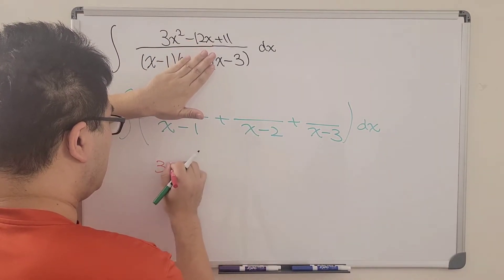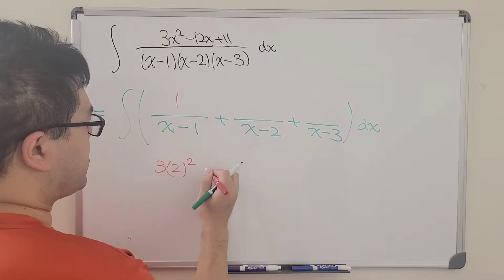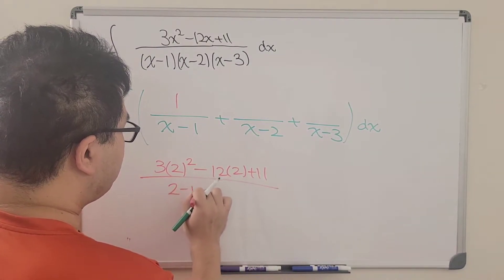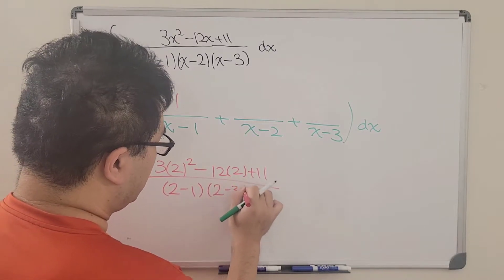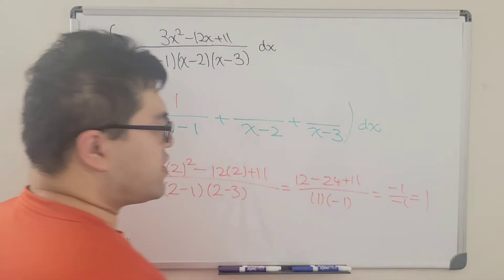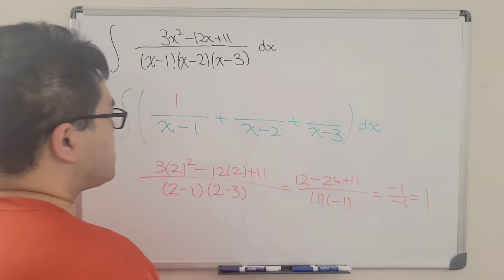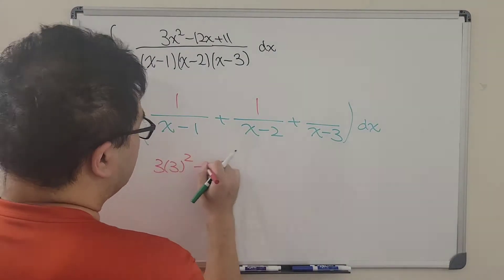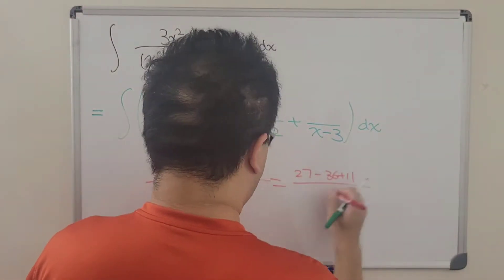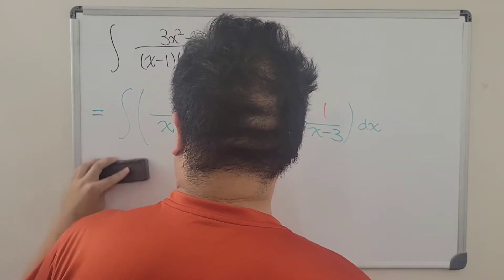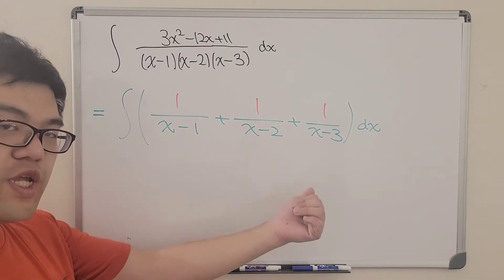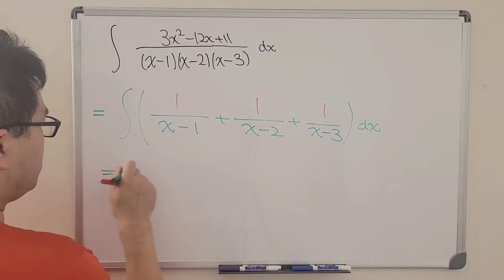So let's do the same for the other two terms. So for x minus 2, we're covering x minus 2 in the denominator. And then we'll replace the x by 2 and get 3 times 2 squared minus 12 times 2 plus 11 all over 2 minus 1 times 2 minus 3. We will get negative 1 over 1, which is equal to 1 here. Excellent! So for the last one. Brilliant!